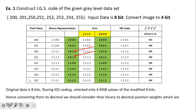After binary representation, we require to add the previous pixel's 4 LSBs. Since the previous pixel is absent for the first pixel, we take 0000. We add these 4 LSBs — adding zero causes no change — and whatever the first four MSBs are becomes our IGS code. So the 4 MSBs 1100 are nothing but our IGS code.